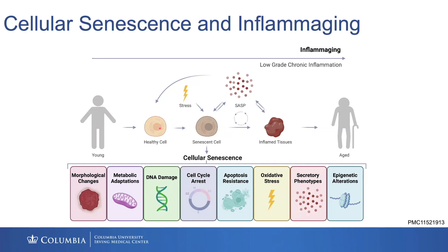There is transformation, where a stressed out or damaged cell could become a cancer cell. And then there's also cellular senescence, where the cell becomes senescent — no longer able to typically proliferate — and usually there's a stable cell cycle arrest.